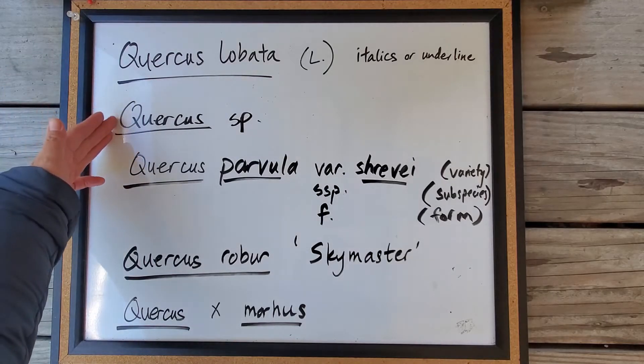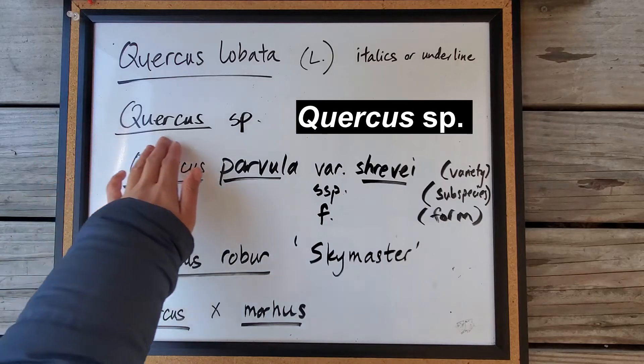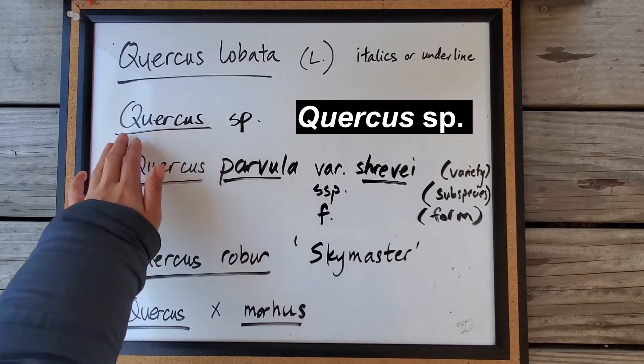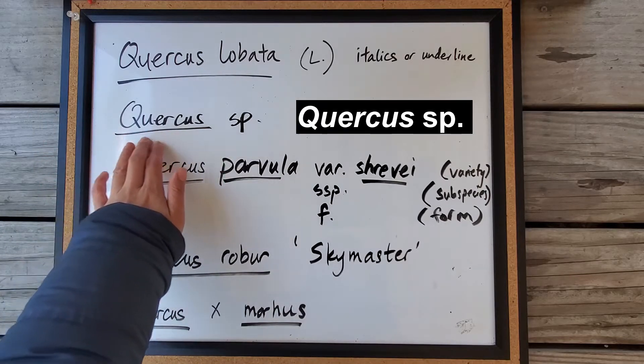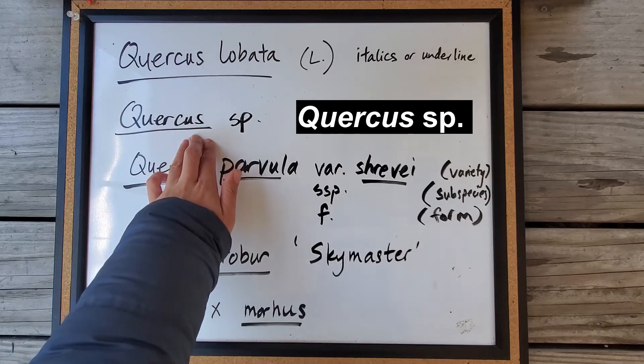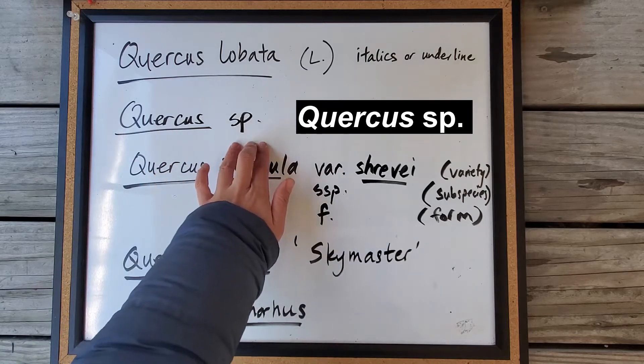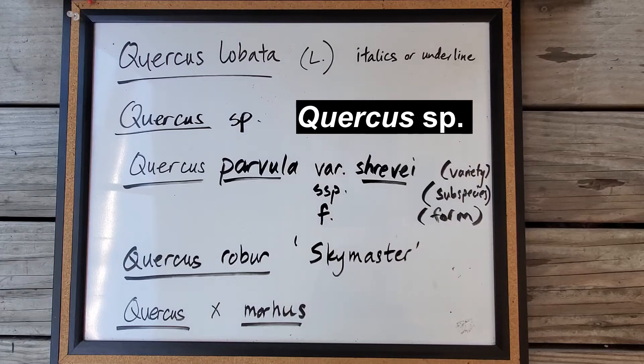Suppose you don't know what species it is. You can write out the genus, same thing, capitalize the first letter, and underline or italicize the genus, and write sp, but don't put that in italics or underline.